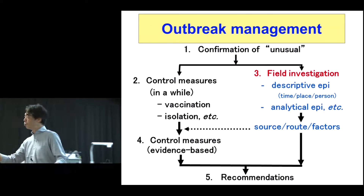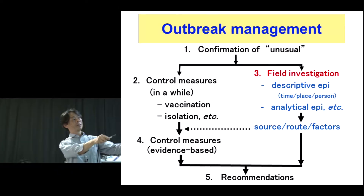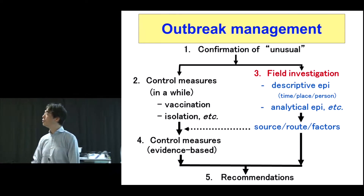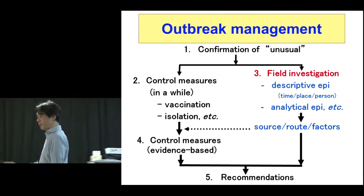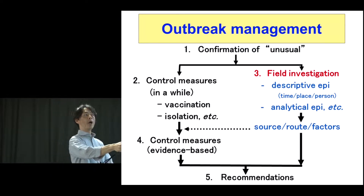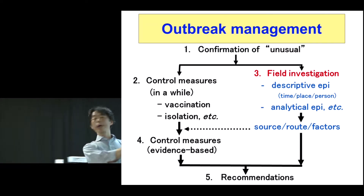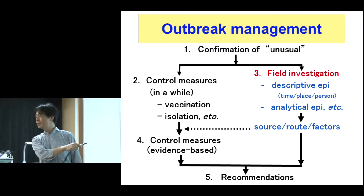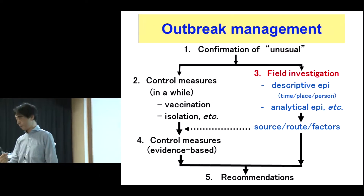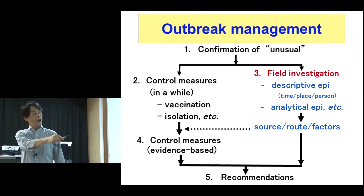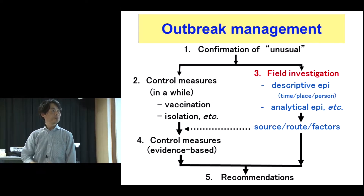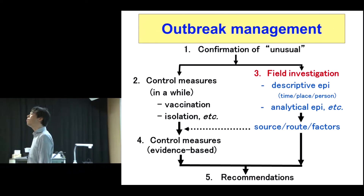As I mentioned, we have two ways. Once we pick up unusuals — outbreaks, let's say — we have two ways. The first one is control measures in the meantime, and the second way is investigation.